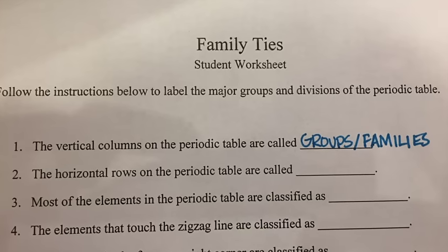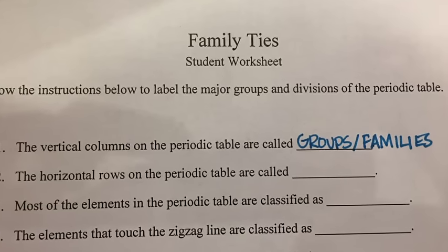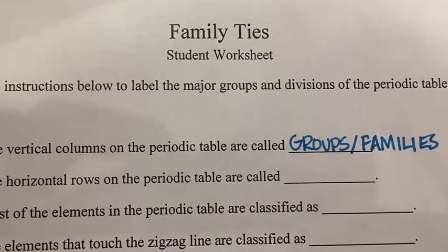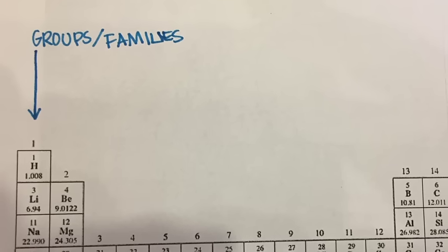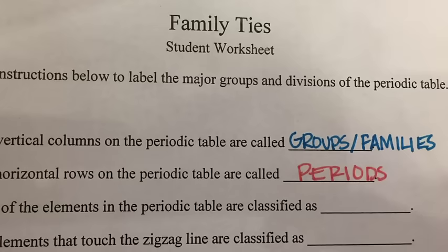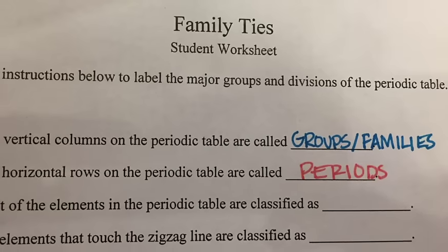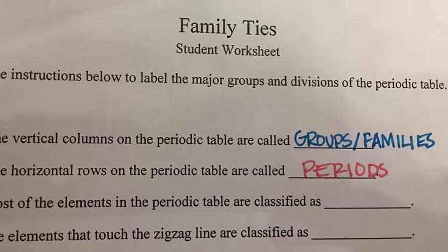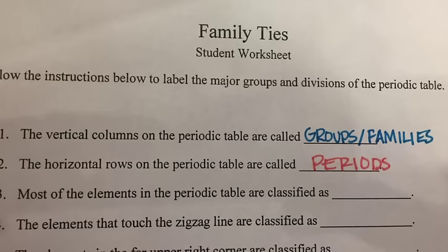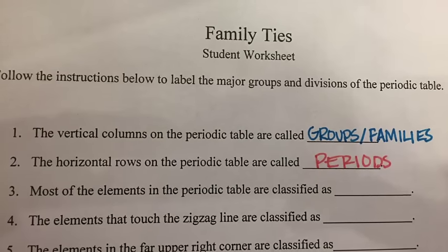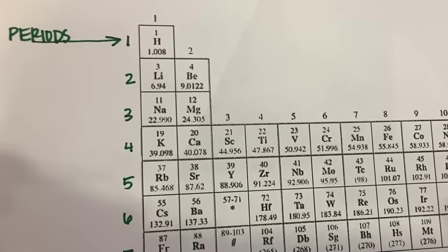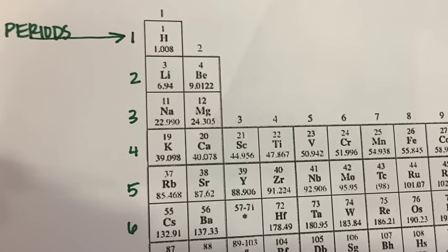The table is also arranged in vertical columns called groups or families. These groups or families all share similar properties, so everything in the same family has similar properties. The horizontal rows are called periods, and each period of the periodic table follows some trends as well.